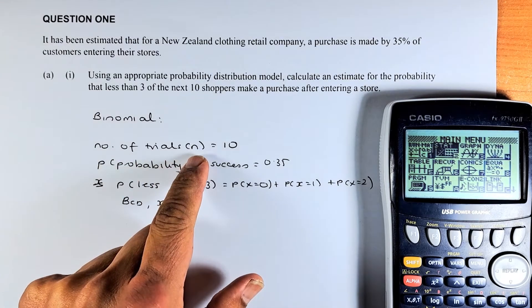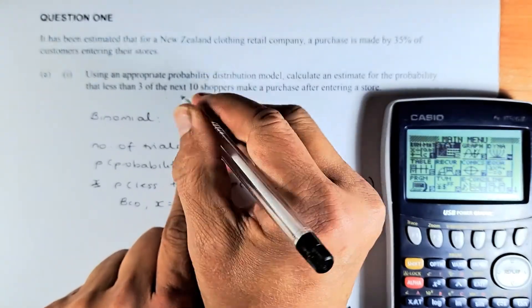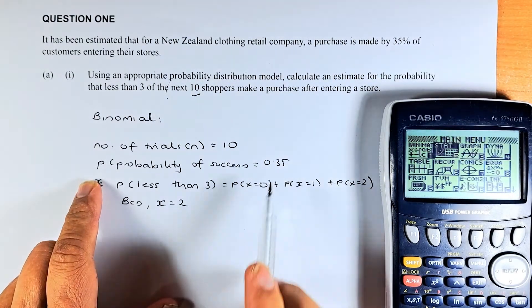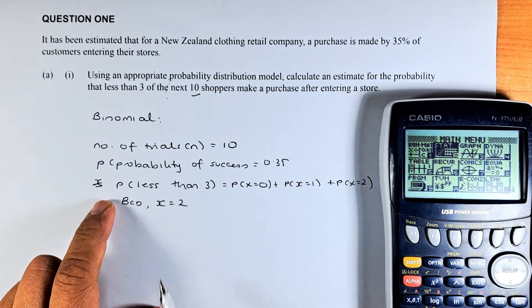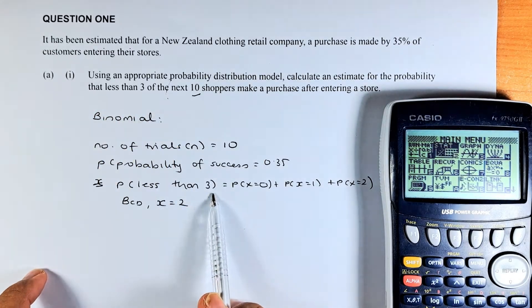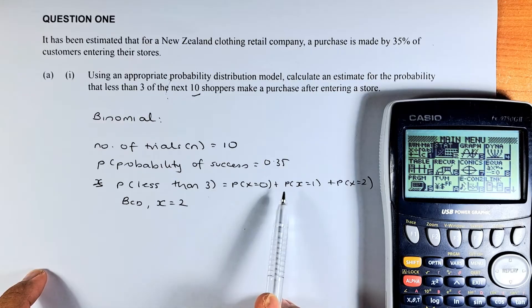So number of trials, which is N, is going to be 10. Probability of success is 0.35, so we put 0.35 or 35%. And the probability that is less than 3, probability of less than 3 is actually equal to probability of 0, 1 and 2.